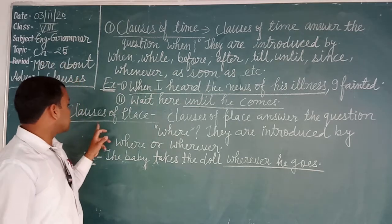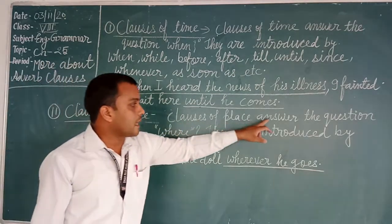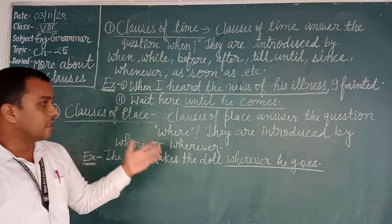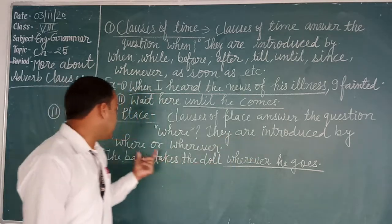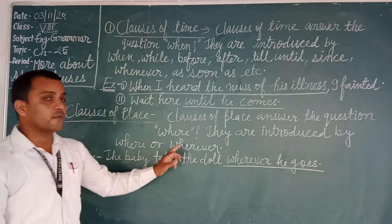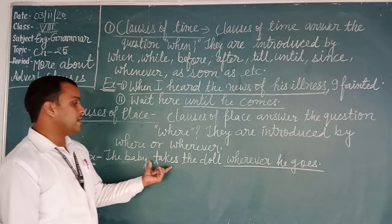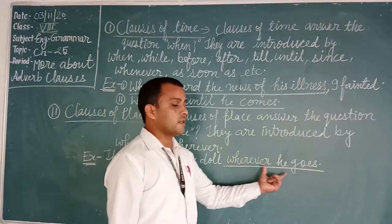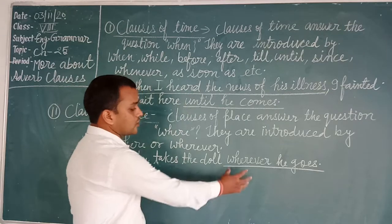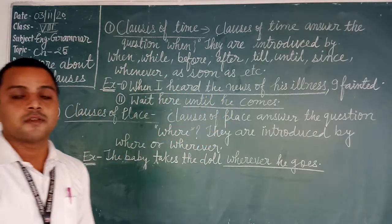Now the second kind: clauses of place. A clause of place answers the question 'where.' They are introduced by 'where' or 'wherever.' For example: 'The baby takes the dog wherever he goes.' The word 'wherever he goes' shows a clause of place.